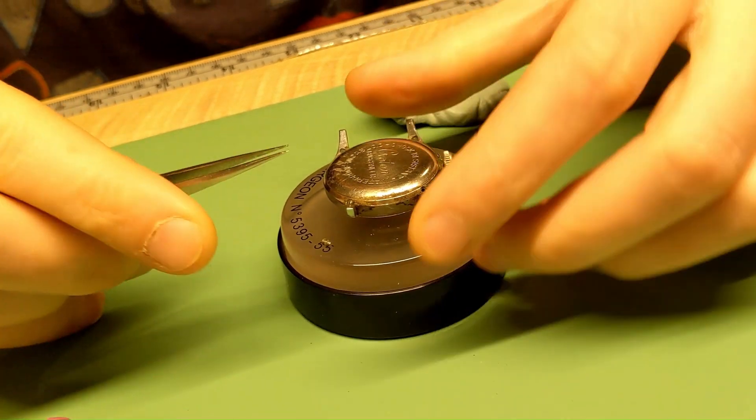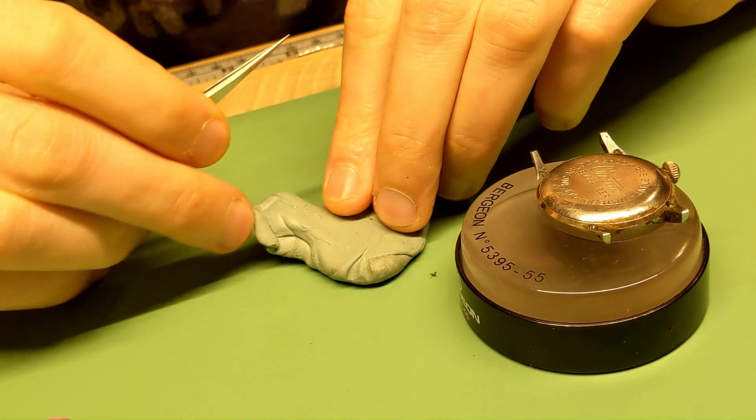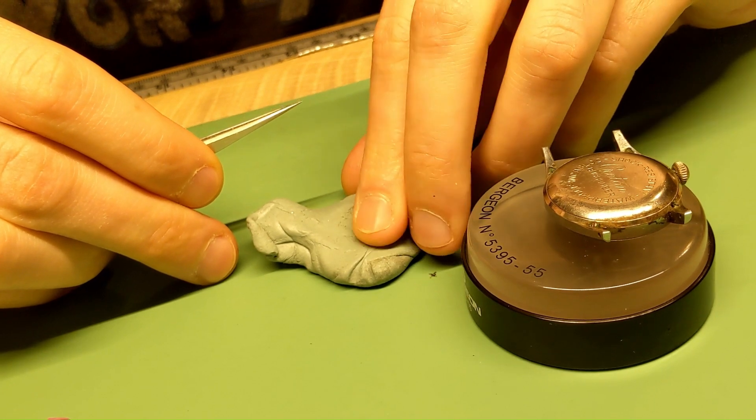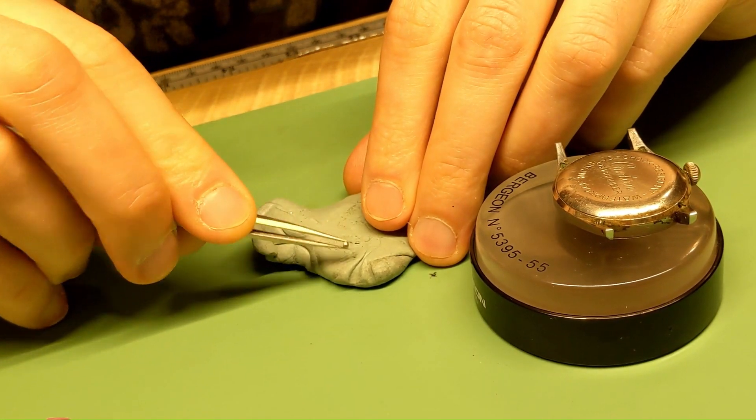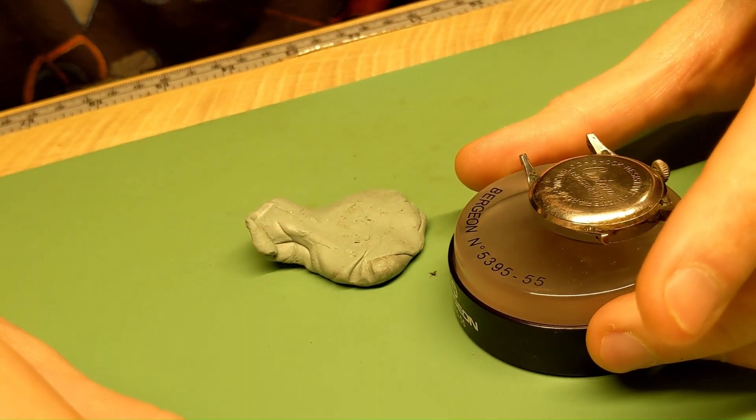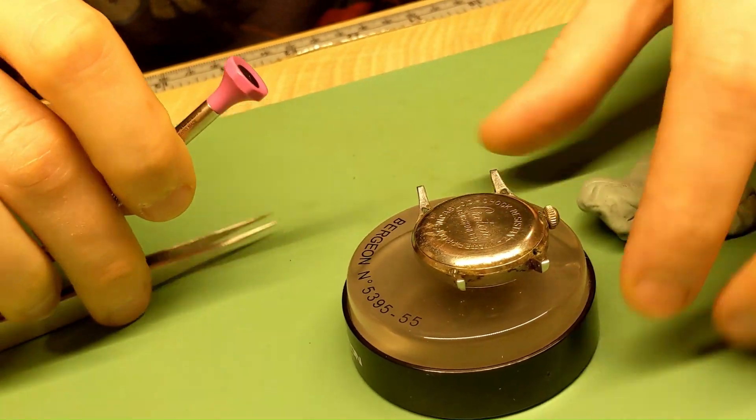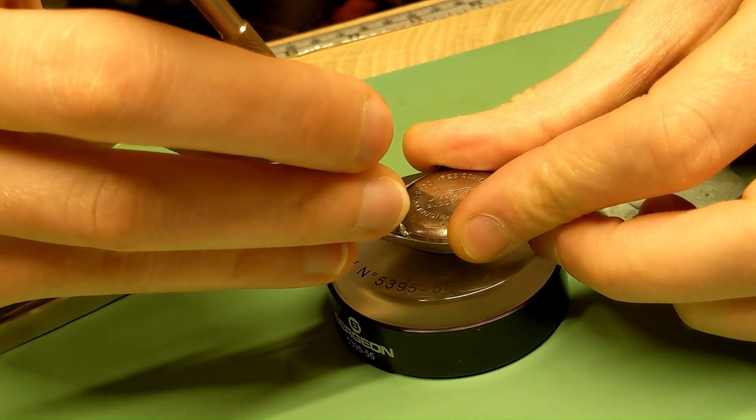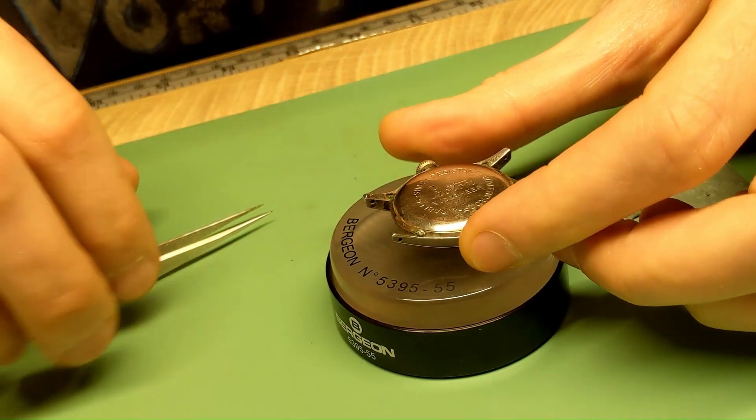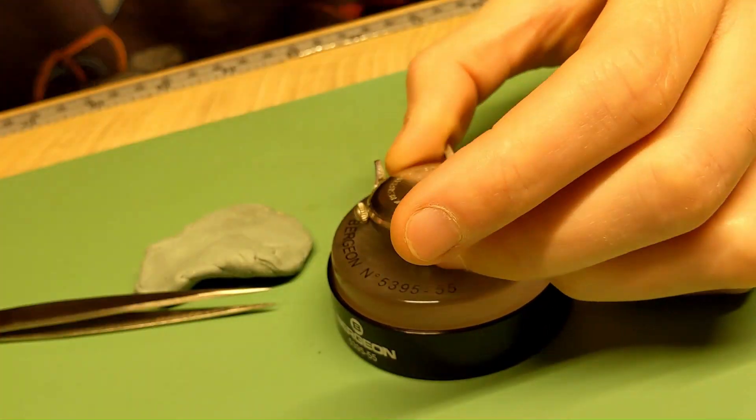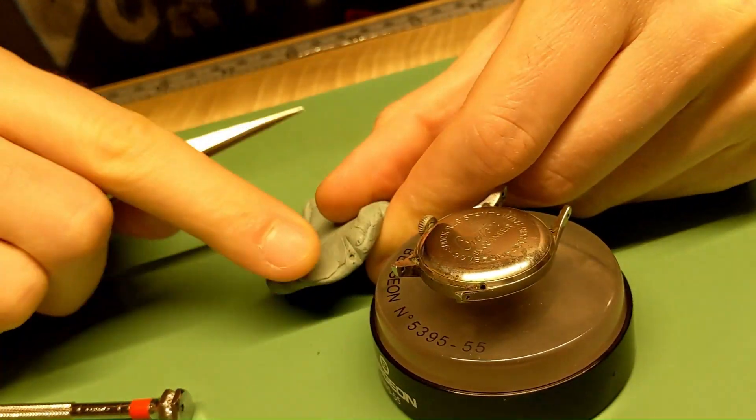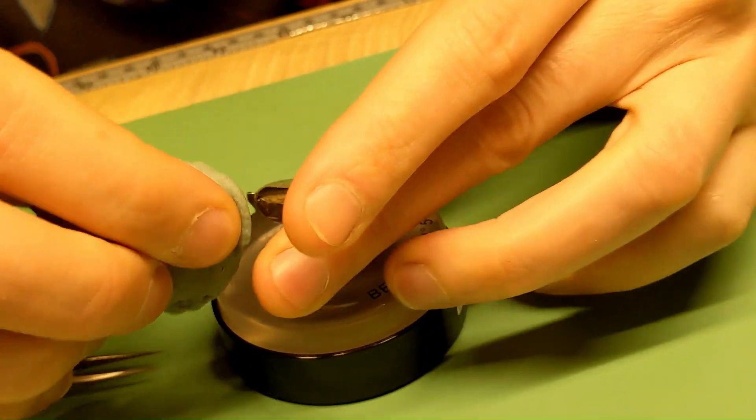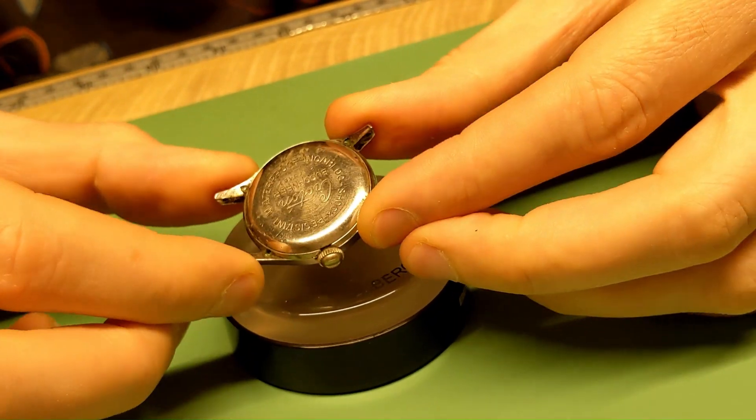When there's really grimy stuff like this, I'll use old grimy rodico. It's already pretty gross, but at least it picks up a lot of the junk and gunk off of the screws or parts before you put it into your cleaning machine. It's better to have it in junk rodico than in your cleaning solution, which you'd have to go through more frequently, which is pretty expensive.